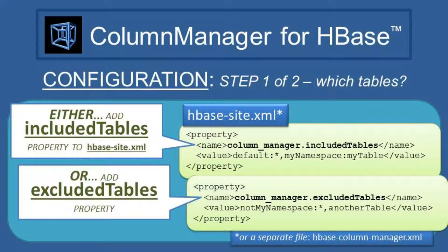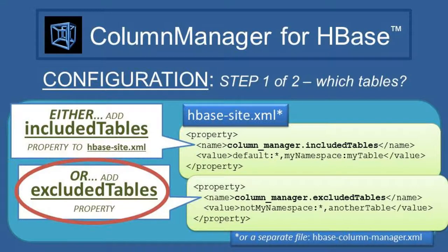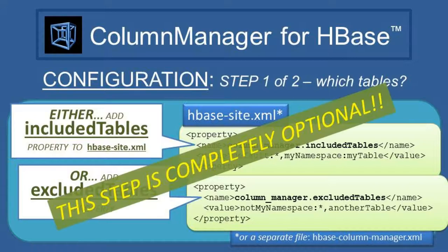The chief optional configuration task is to tell Column Manager which tables to include in Column Manager processing, or you can take the opposite approach and tell Column Manager which tables to exclude. This step is completely optional — if you don't specify which tables to include or exclude, all user namespaces and tables are automatically included in Column Manager processing.